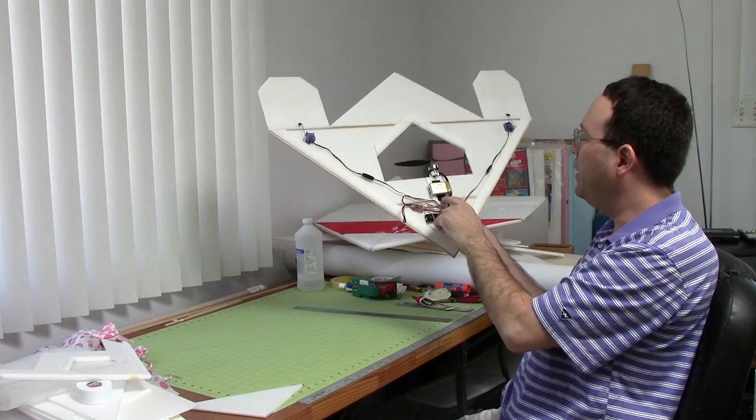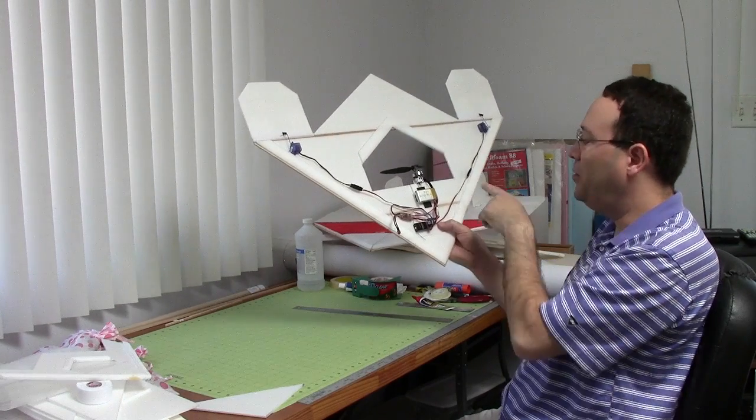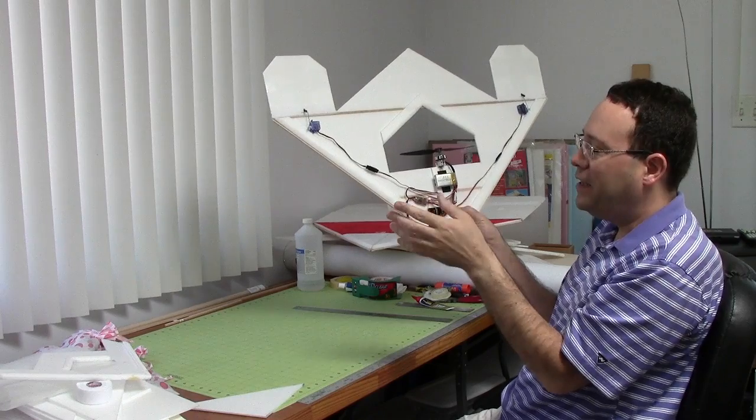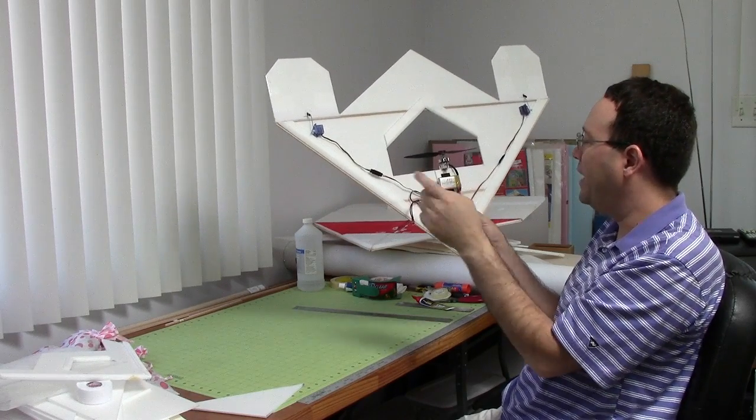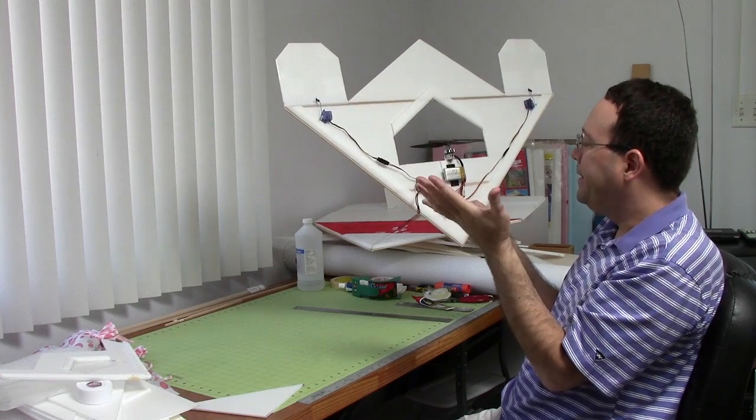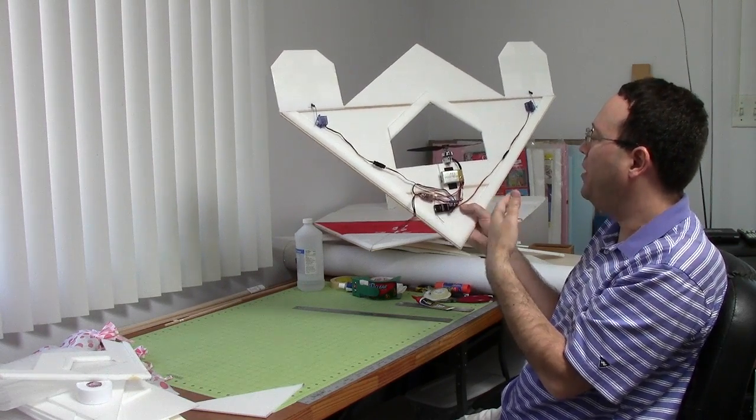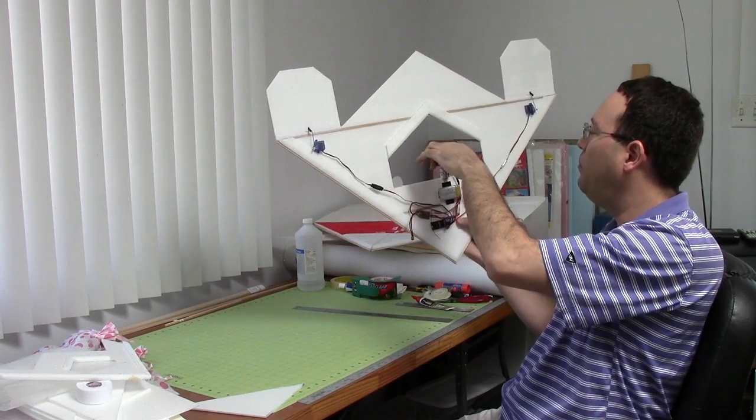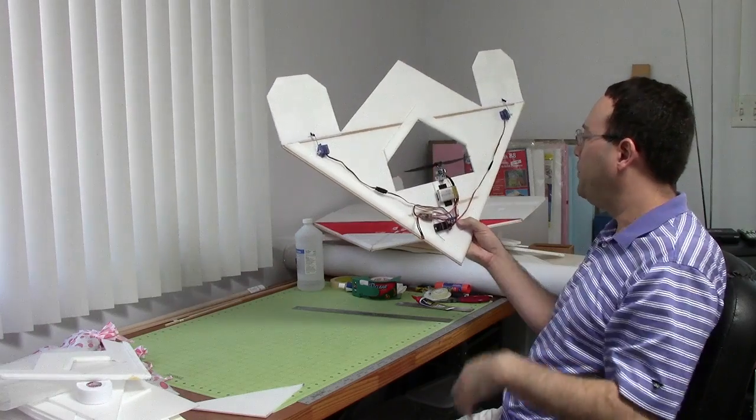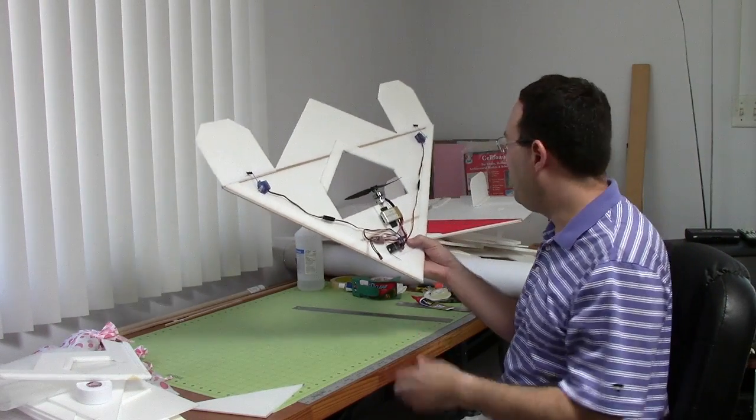Put some velcro on here. Last time when I was doing the first prototype, I had run out or couldn't find my velcro, so I got some more, put it on here. Simple receiver, speed, 10 amps speed control. This is a blue wonder motor.